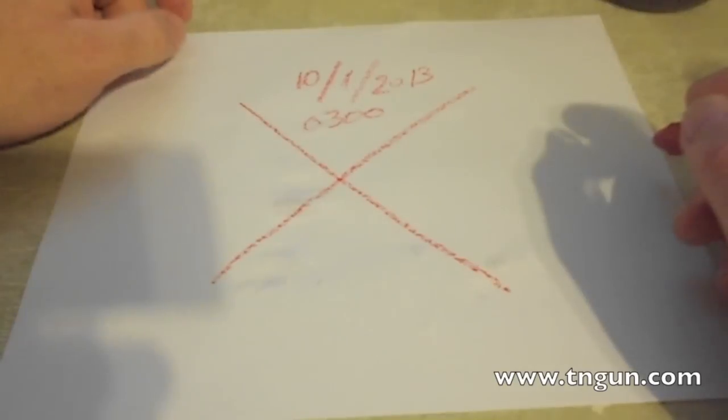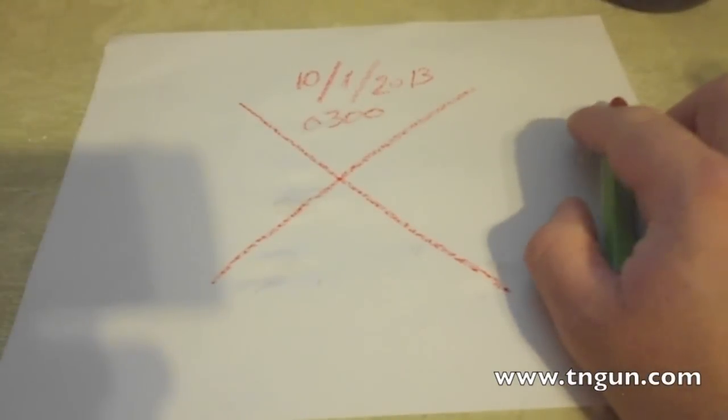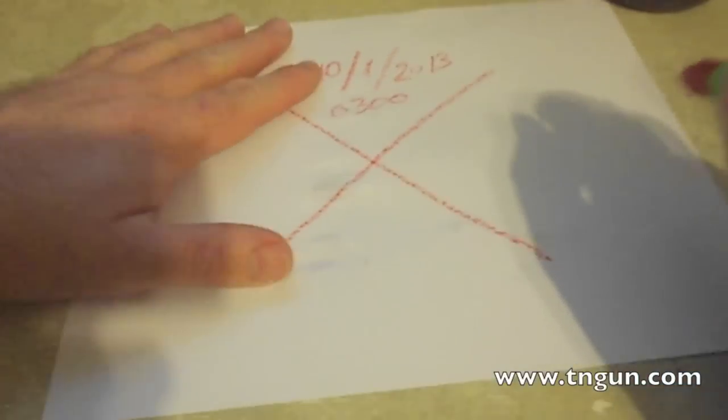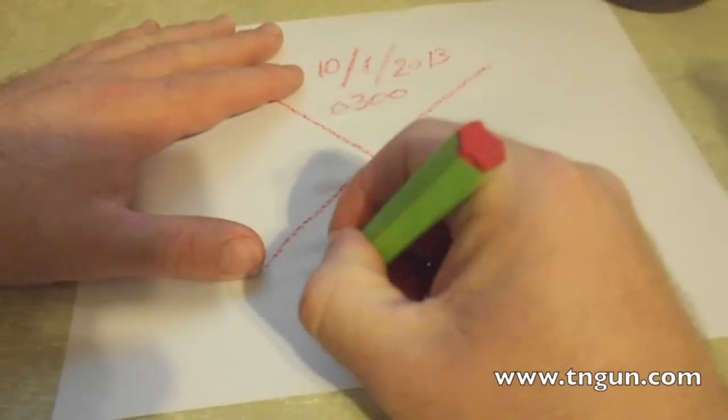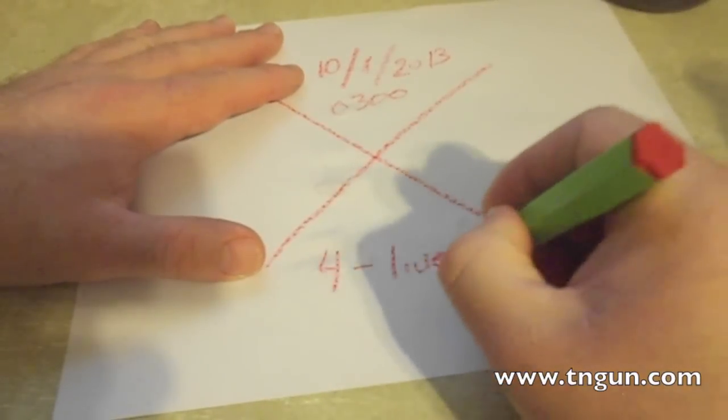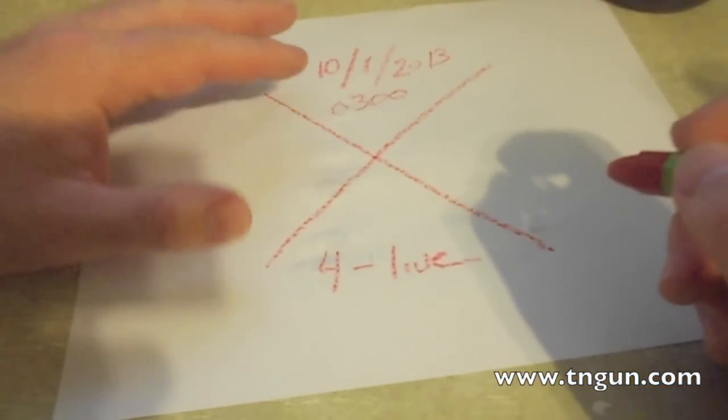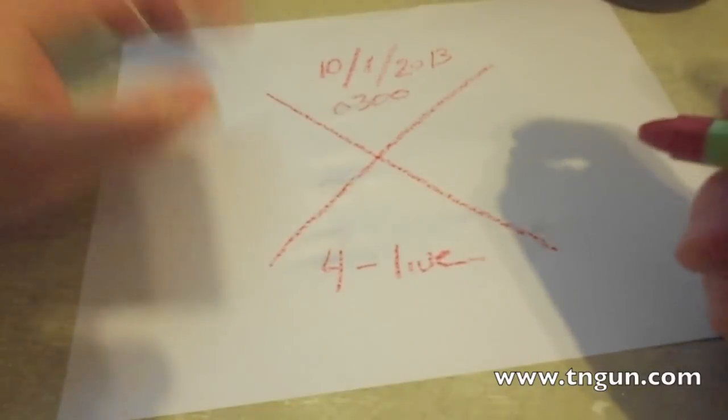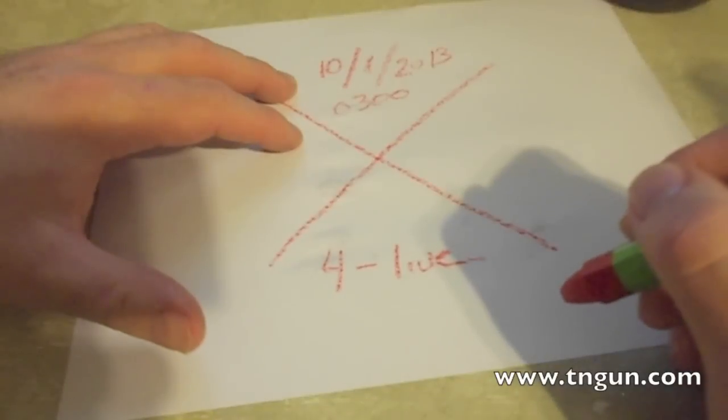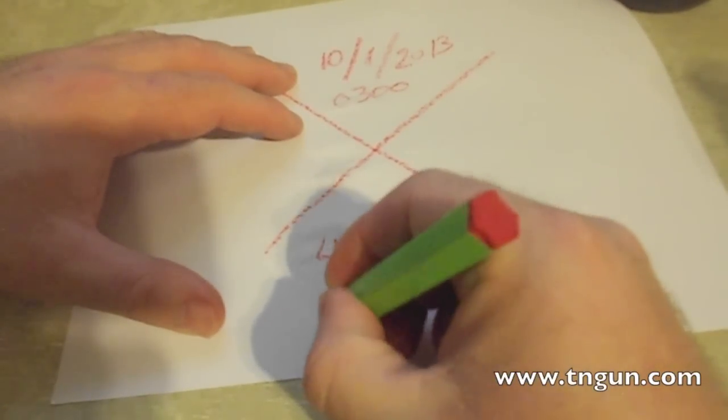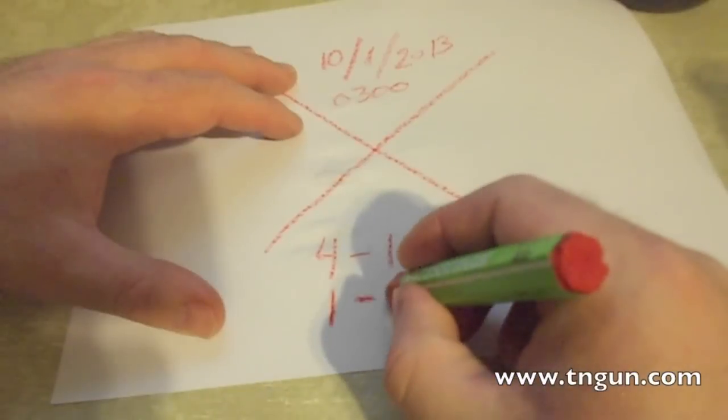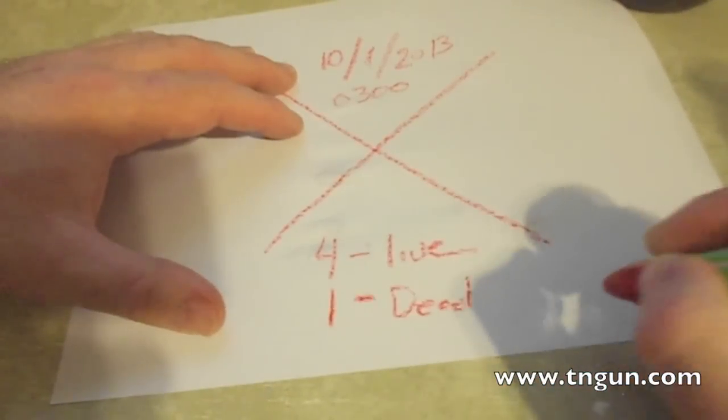That's not the only information this can have. Say we come in and found four live people that we rescued, so down the bottom we put four live. Unfortunately, there was a little bad guy action, or it got cold, or somebody got hit in the head with a stick, who knows, and you got one person deceased.